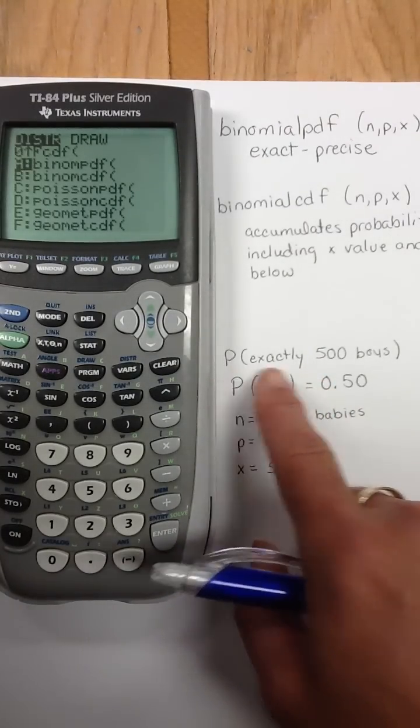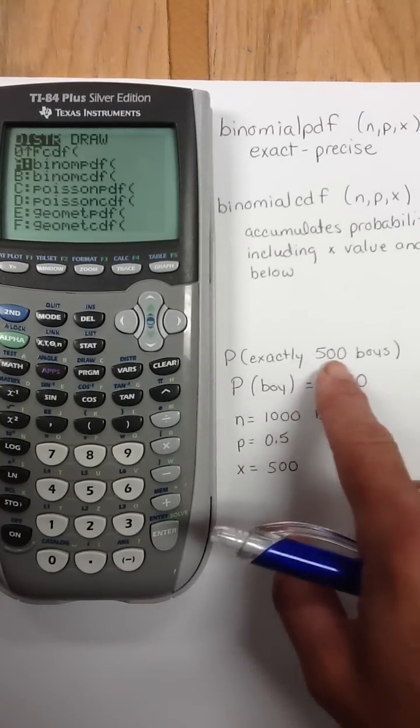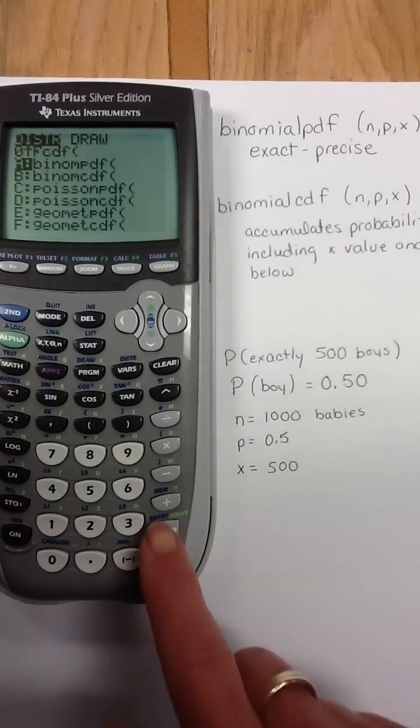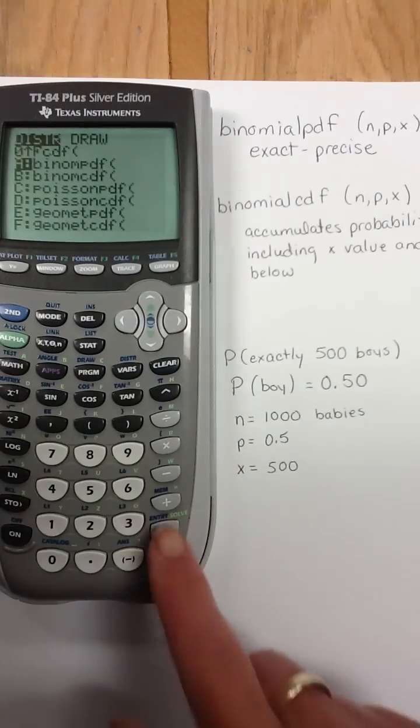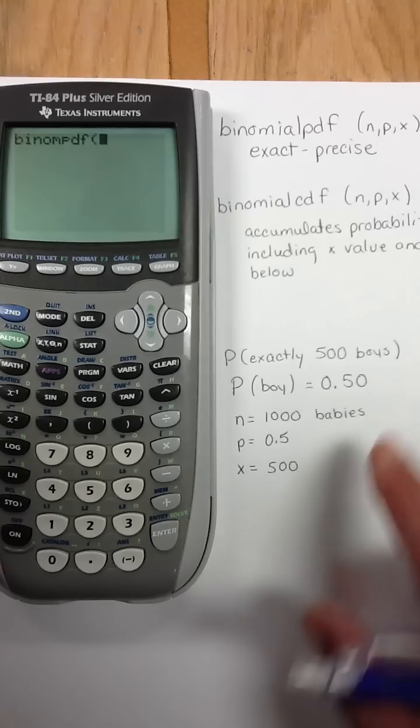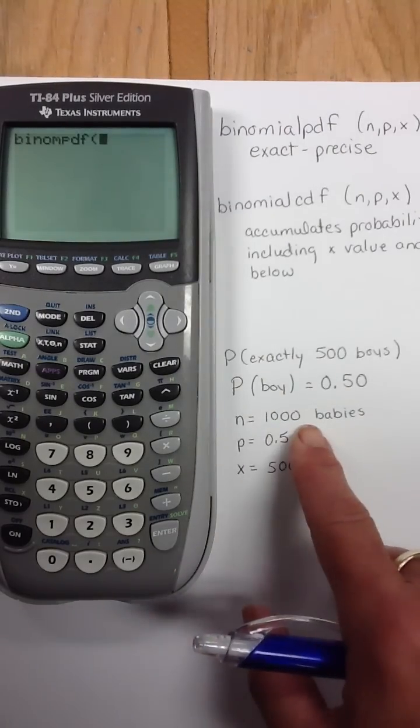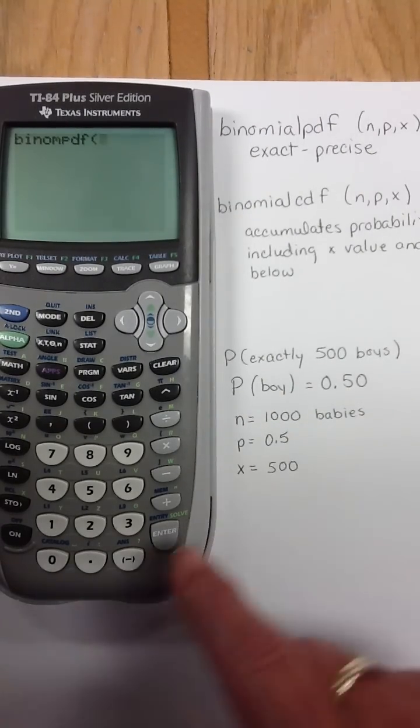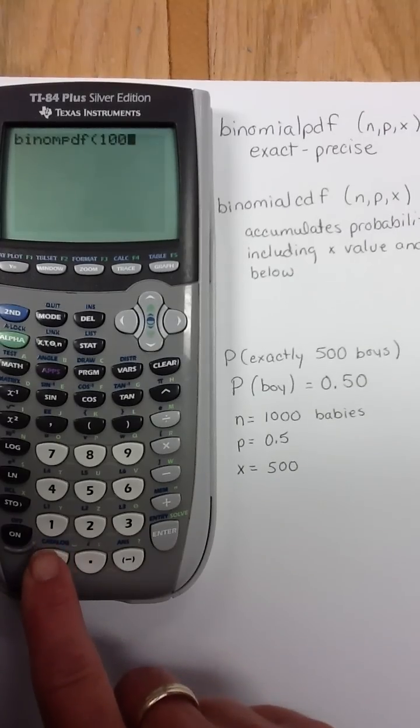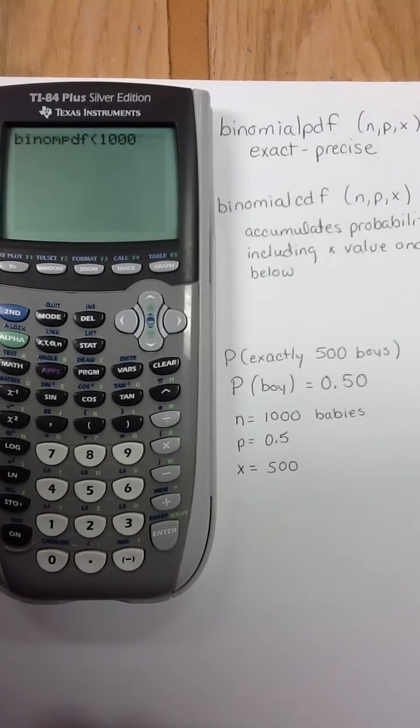I'm going to say, what's the probability of having exactly 500 boys? So, I'm going to the precise one, PDF. I'm going to hit Enter on PDF, and I'm going to put in my N value. So, here I'm going to say, there's 1,000 babies born in a hospital in a year. So, we're going to put our N value as 1,000.